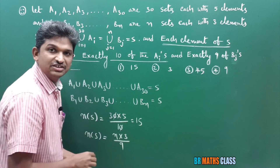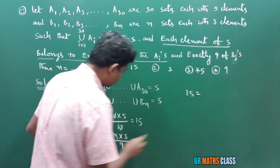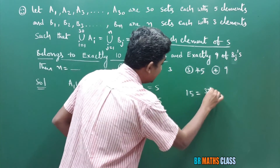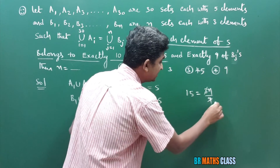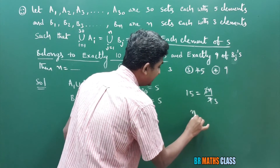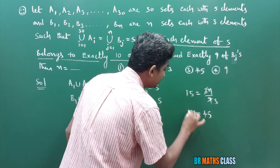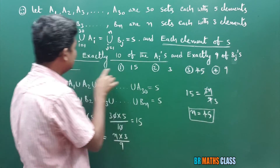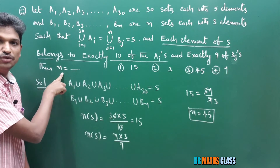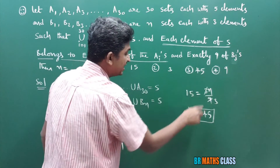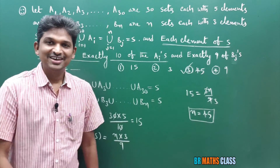Now, 15 is also number of elements in S, and 3N/9 is also number of elements in S. Just equate these two: 15 equals 3N divided by 9. Simplifying, N equals 15 into 3, which is 45. They are asking the value of N only in the question. We got N equal to 45, so the third option is the right option.